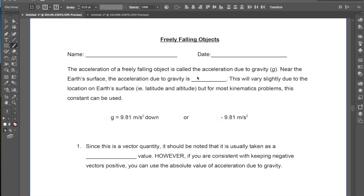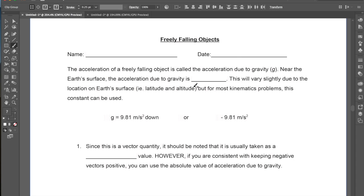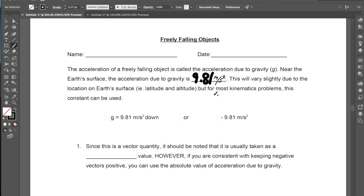Now near Earth's surface, which is where we're going to be doing the majority of our calculations, it has taken to be 9.81, just going to fix the size of this pen here, 9.81 meters per second squared. This means that it's hurling towards the Earth at an acceleration of 9.81 meters per second every second.